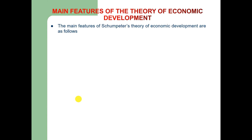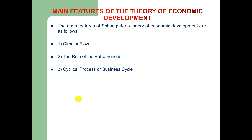The main features of Schumpeter's theory of economic development include the following: number one, circular flow; the role of the entrepreneur; the cyclical process or crisis, also known as the business cycle; and the end of capitalism. We will now discuss these main features one by one.